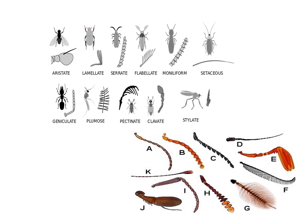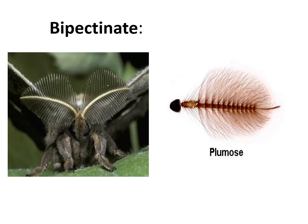The different types of antennae can be noted in this diagram: aristate, lamellate, serrate, flabellate, moniliform, setaceous, geniculate, plumose, pectinate, clavate and stylate. This shows bipectinate antennae of a moth and plumose antennae of a mosquito.